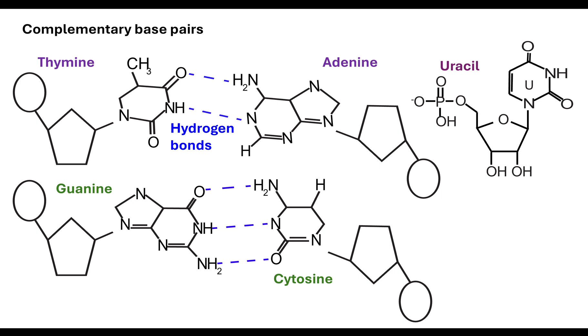They complementary base pair by producing three hydrogen bonds between the two nitrogenous bases. I love using little tricks to help me remember. Cytosine starts with a C. C is the third letter of the alphabet. Therefore, cytosine always makes three hydrogen bonds with guanine, and adenine and thymine make two.